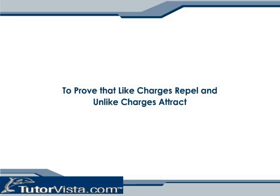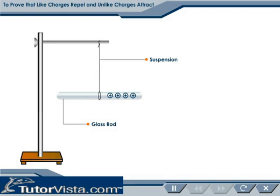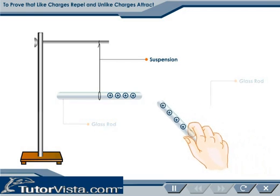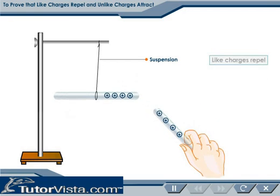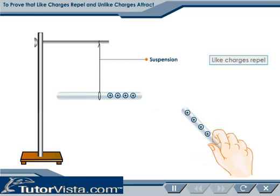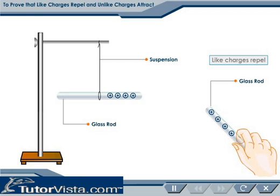To prove that like charges repel and unlike charges attract, suspend a glass rod rubbed with silk. Bring another glass rod rubbed with silk closer to the suspended rod. You observe that the suspended rod is moving away, showing that the charges present on both the glass rods are similar.